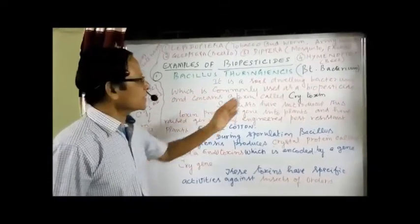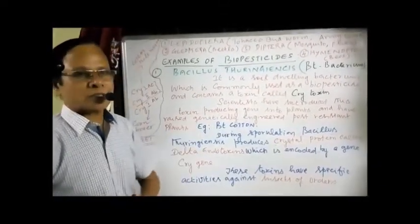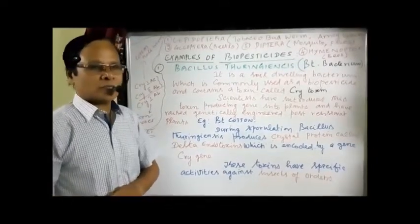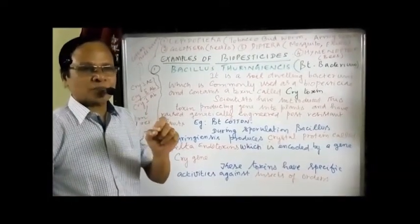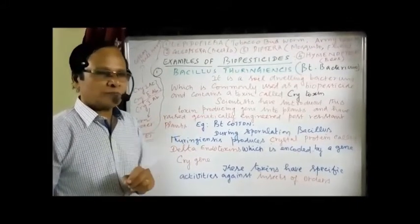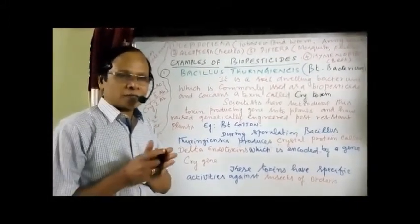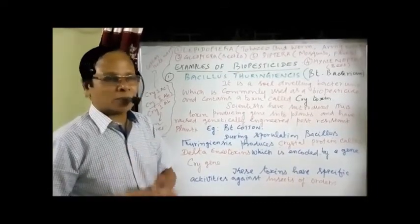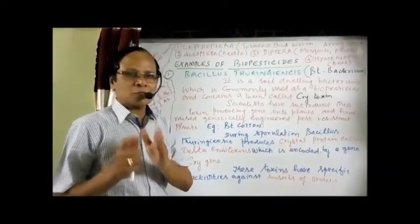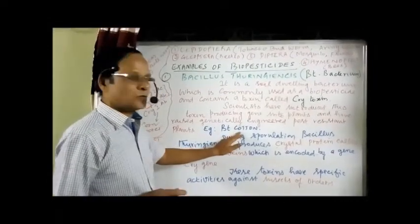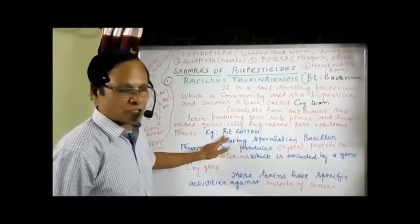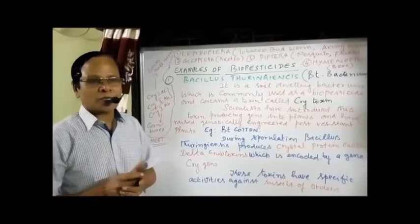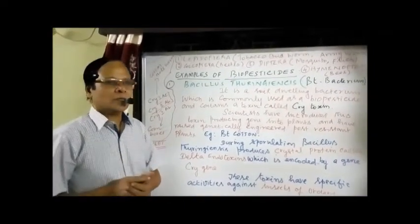Bacillus thuringiensis contains a toxin called Cry toxin (CRY toxin), because it is produced by a gene called the CRY gene. Scientists have introduced different types of CRY genes into plants and have raised genetically engineered pest-resistant plants. One such plant, resistant to pests, is Bt cotton — produced through incorporation of the Bt gene from Bacillus thuringiensis. Bt cotton is a genetically engineered plant highly resistant to insect pests.